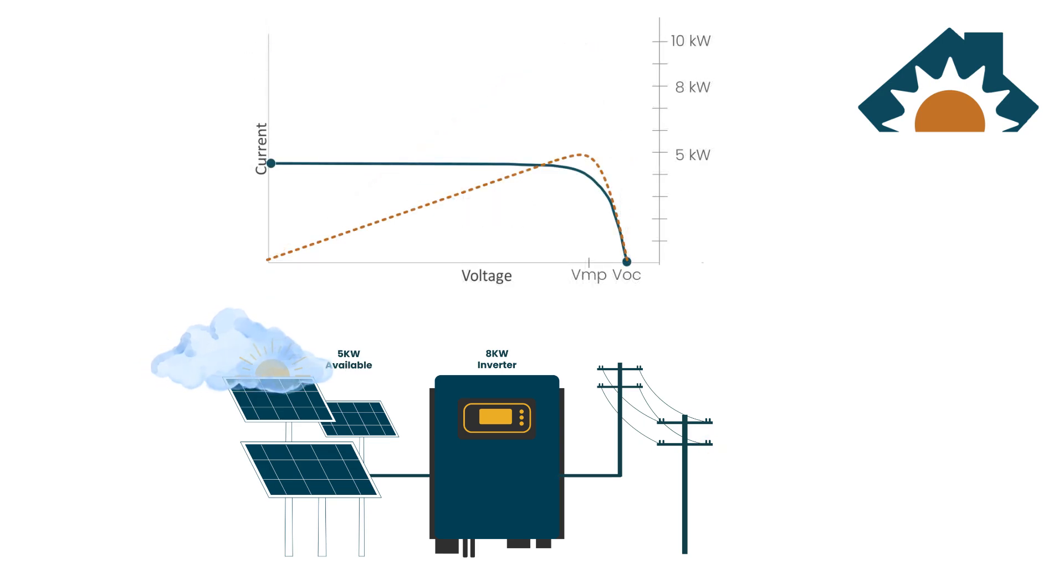Now, although you may have a 10 kilowatt array on its best day, that power won't always be there, for example, on a cloudy day. In this case, let's say you only have 5 kilowatts available at the array and you haven't derated the inverter. Then the inverter will try to track to the maximum power point in order to maximize production to get as close to 8 kilowatts as possible. And that's a quick explanation on how inverters can have more power connected to it than its output rating.